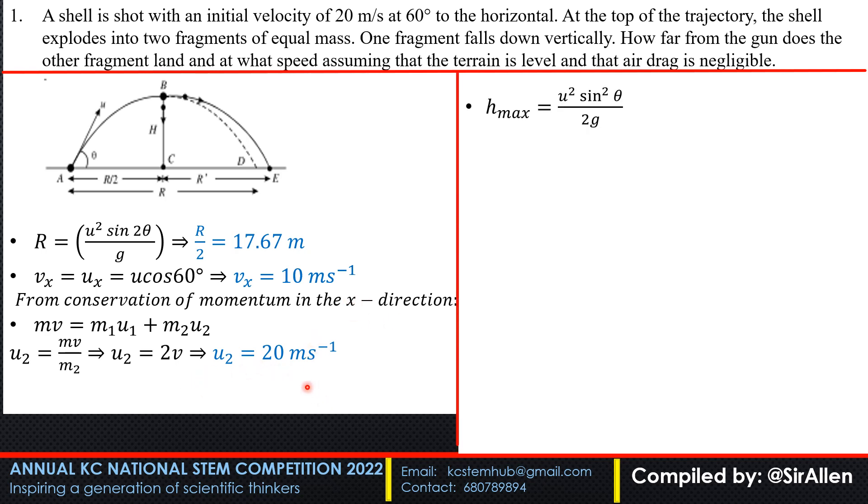Now we calculate the maximum height reached by this projectile. h max is u squared sine squared theta over 2g. Substituting the values, h max equals 15.3 meters. We need this vertical height to get the other part of the range.